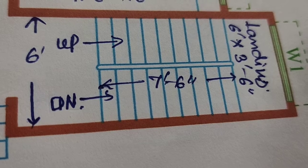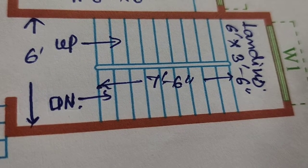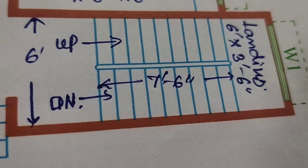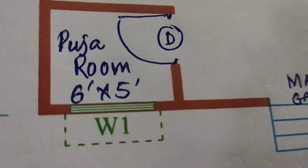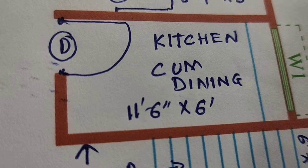Stair room, 6 feet with landing size for total staircase. Puja room, size 6 feet into 5 feet. Kitchen cum dining, size 11 feet 6 inches into 6 feet.